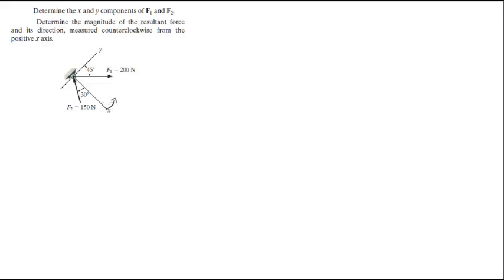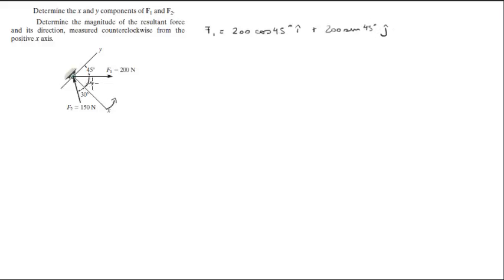The way you do this problem is you gotta break down F1 into the x and the y, which will be 200 cosine of 45 degrees in the positive y direction, plus 200 sine of 45 degrees in the j direction. Remember this is also 45 degrees. When you solve this with your calculator you get 141.4 in the i plus 141.4 in the j, since sine and cosine of 45 are the same thing.